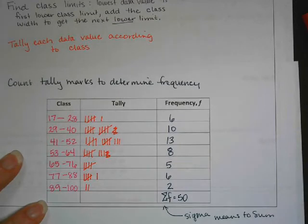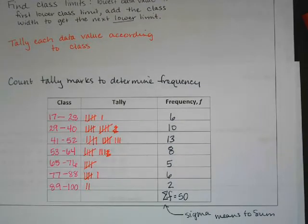You see it a lot in statistics - they just want it to look fancy. And the little f next to it just means frequency. So the sum of the frequencies is 50, and it should be because they gave us 50 data points to begin with.